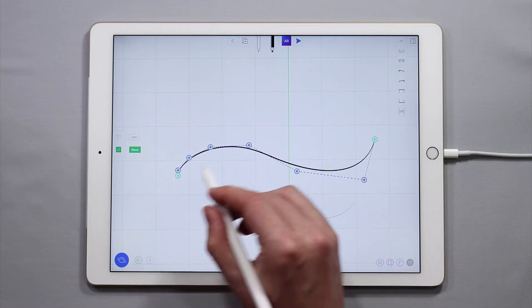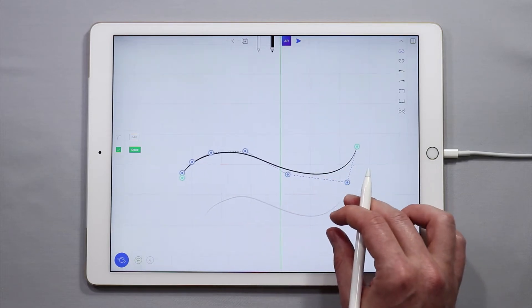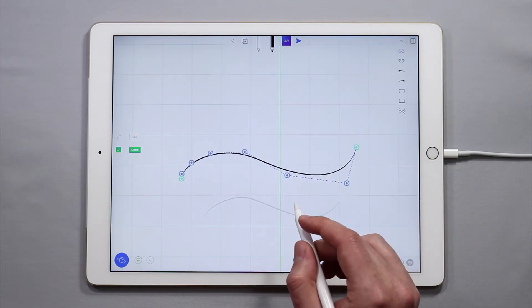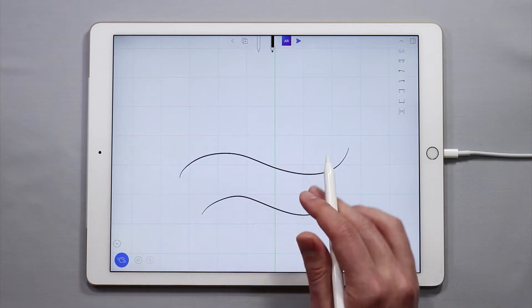If you export files created in UMake these curves will translate into other applications that you use such as Alias, Rhino, Maya, Moment of Inspiration, etc. So enough about that.